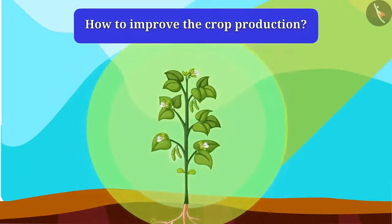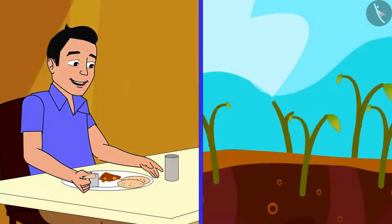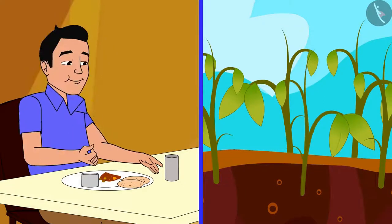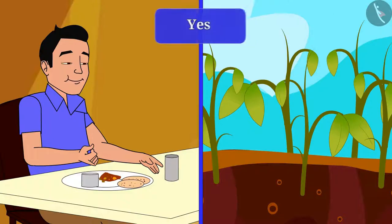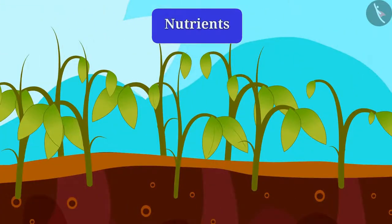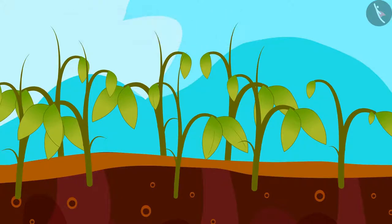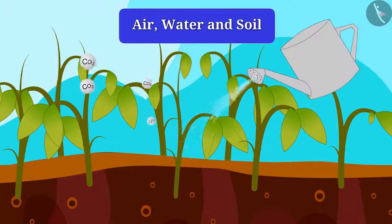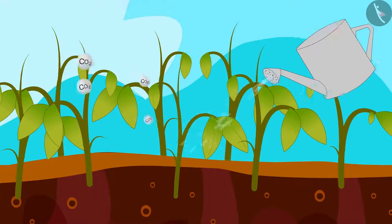Now we will know how to improve crop production. We all know that we need food for our growth. Do plants also require nutrients for their growth? Yes, plants need nutrients for their growth. Do you know they can get nutrients from where? Yes, from air, water, and soil.